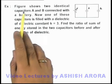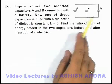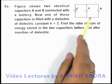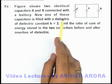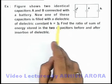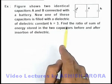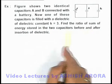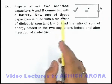In this example, this figure shows two identical capacitors A and B connected with a battery. We can see both are connected in parallel with a battery. Now one of these capacitors is filled with a dielectric of dielectric constant k equal to 3, and we are required to find the ratio of sum of the energy stored in the two capacitors before and after insertion of dielectric.